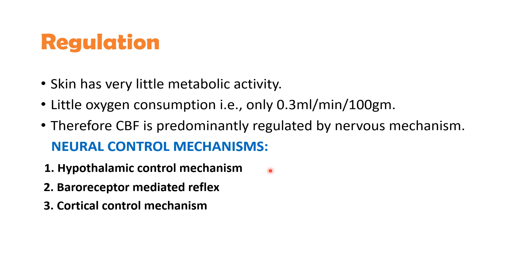This heat-increased blood flow carries the heat to the surface of the body, which is dissipated by radiation, evaporation and conduction to the environment. During exposure to cold, the opposite happens — the tonic discharge is markedly increased, decreasing the blood flow to as low as 1 ml per minute per 100 grams.